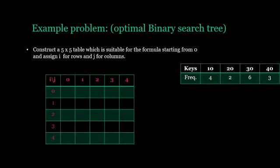Firstly, we need to construct a 5 by 5 table which is suitable for the formula. Even though we have only 4 keys, we will have to construct a table of 5 by 5. Assign i for rows and j for columns.